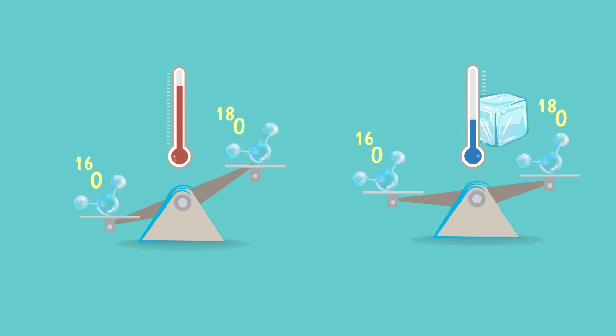If we know how the concentration of oxygen isotope has varied over time, we can also know what the temperatures were like. So how do we do that? Fortunately, this information is contained in the geological record.